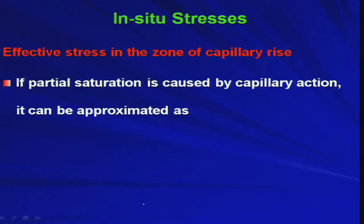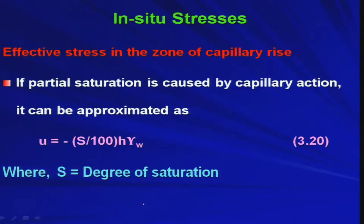If partial saturation is caused by capillary action, pore water pressure can be approximated as U = -(S/100) · h · γ_w, where S is the degree of saturation. If S equals 100 — fully saturated — pore water pressure in the capillary zone is -h·γ_w. If S is lower than 100, pore water pressure should be calculated accordingly from this equation.